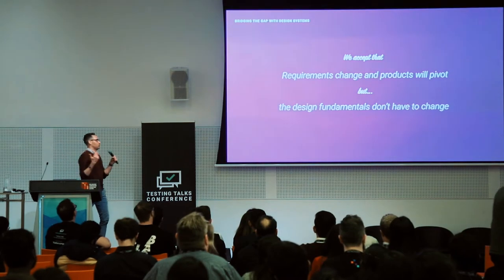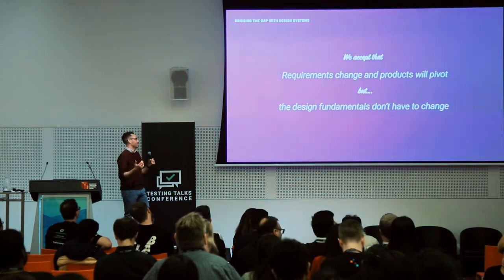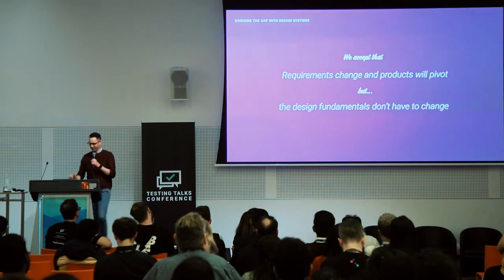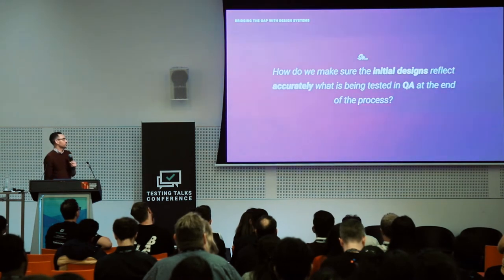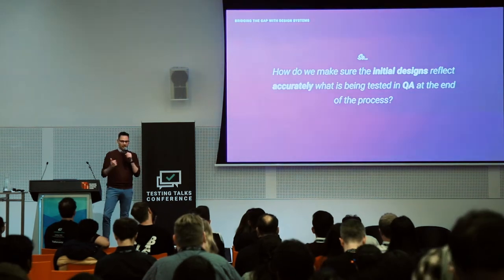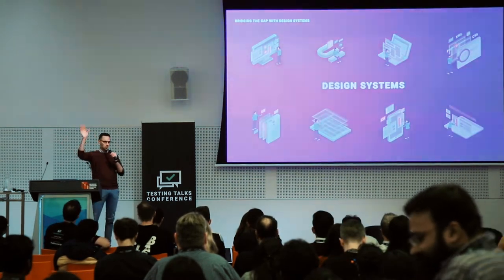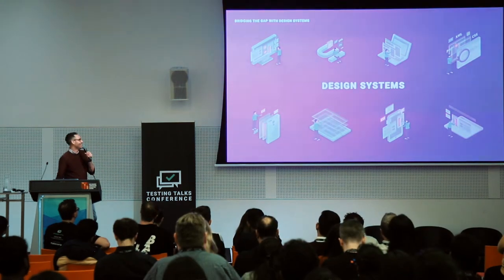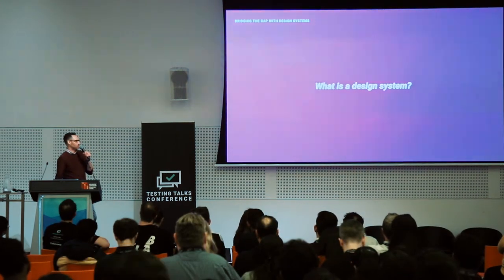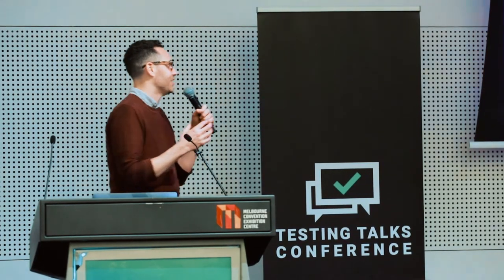We accept that requirements change and products pivot — that just happens. But design fundamentals don't need to change. So how do you make sure the initial designs reflect what is actually being tested in QA at the end of the process? The answer is design systems. A design system is a living, breathing collection of reusable components guided by clear standards that can be assembled together to form products.